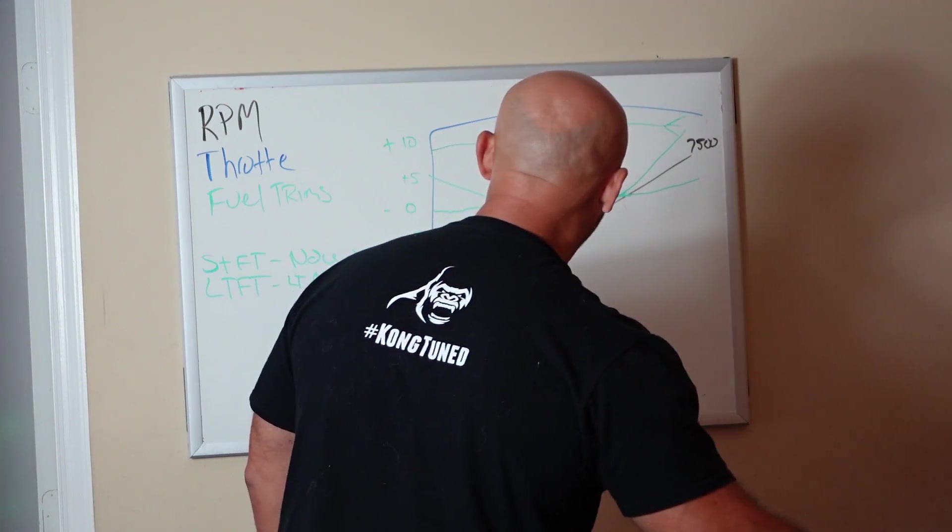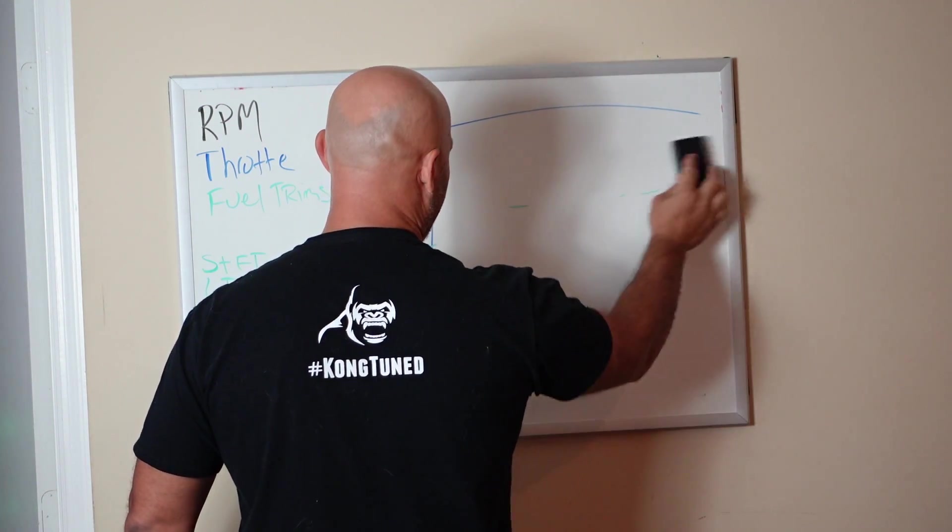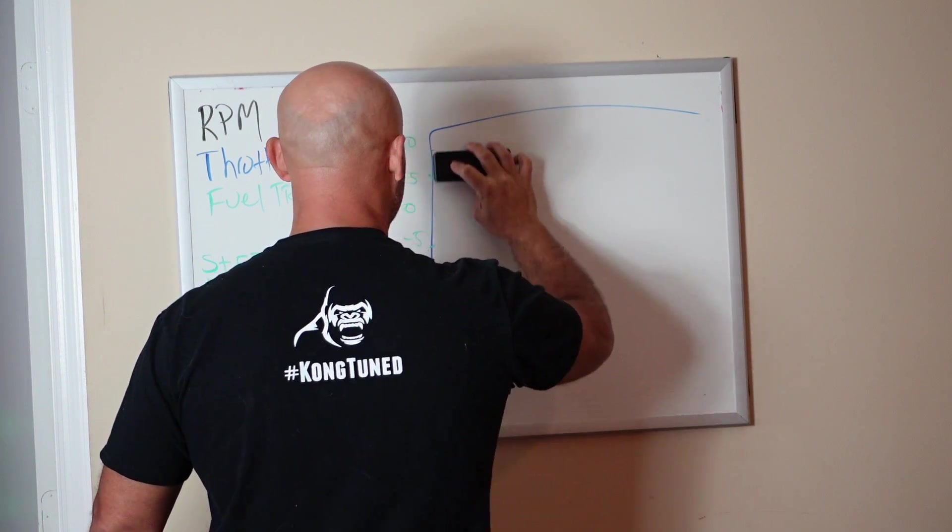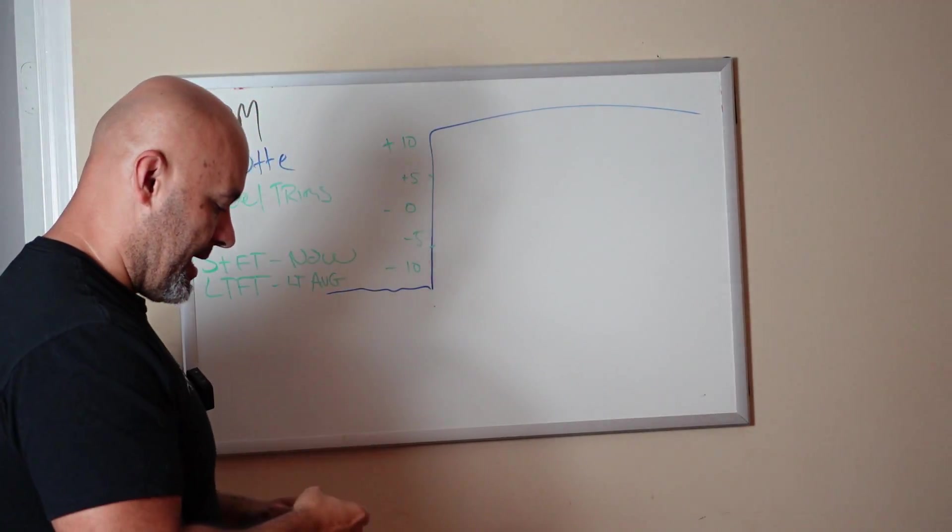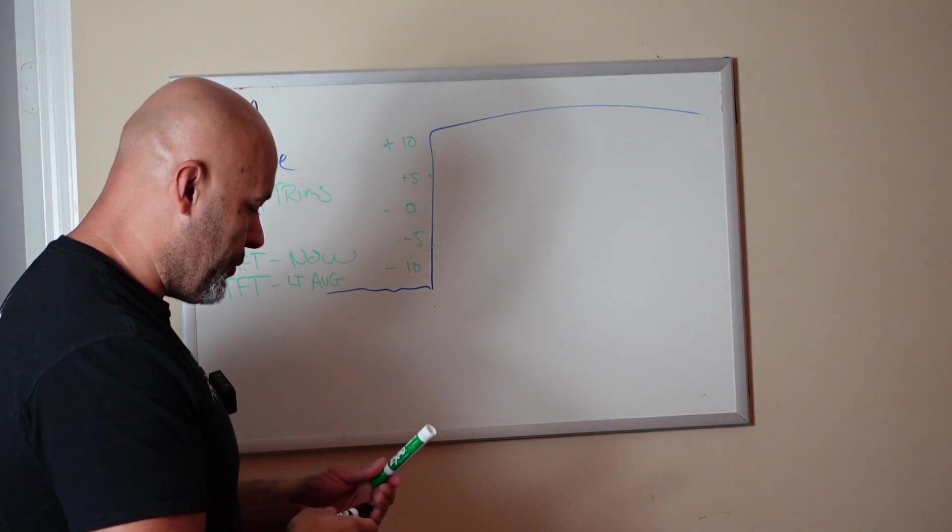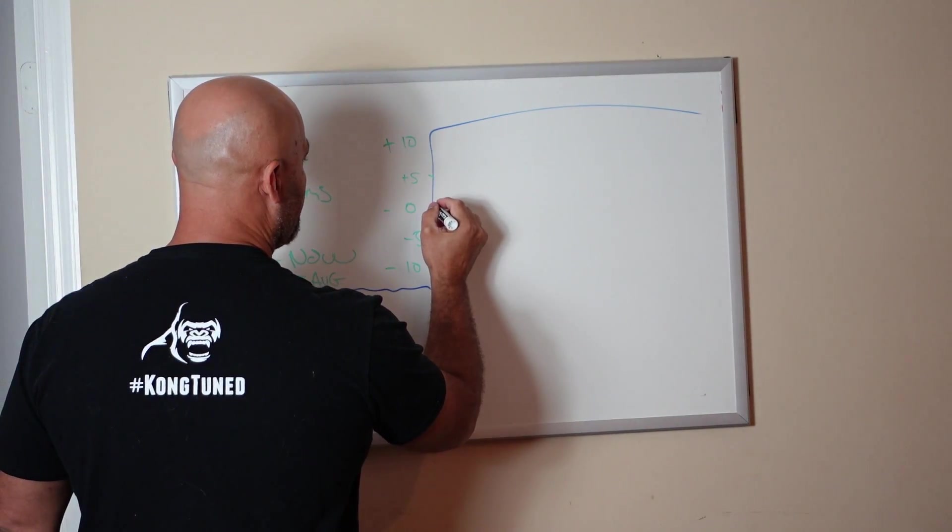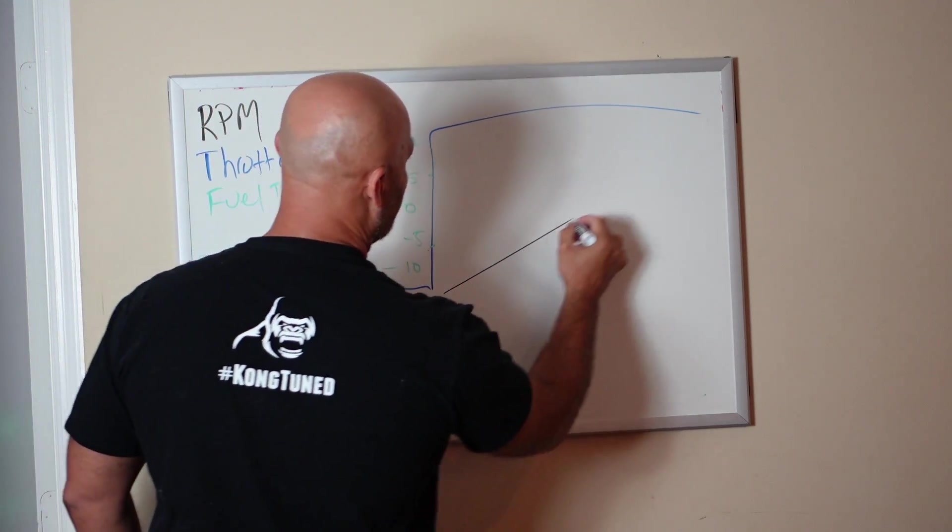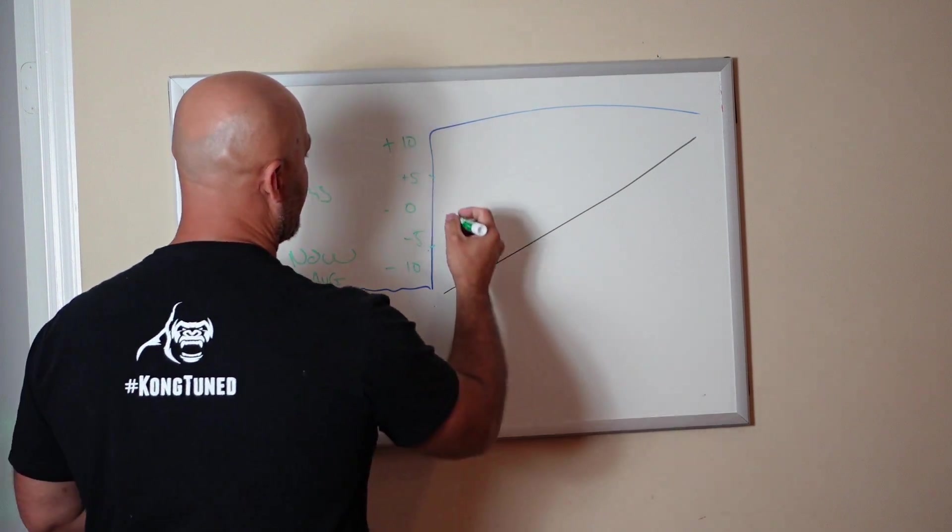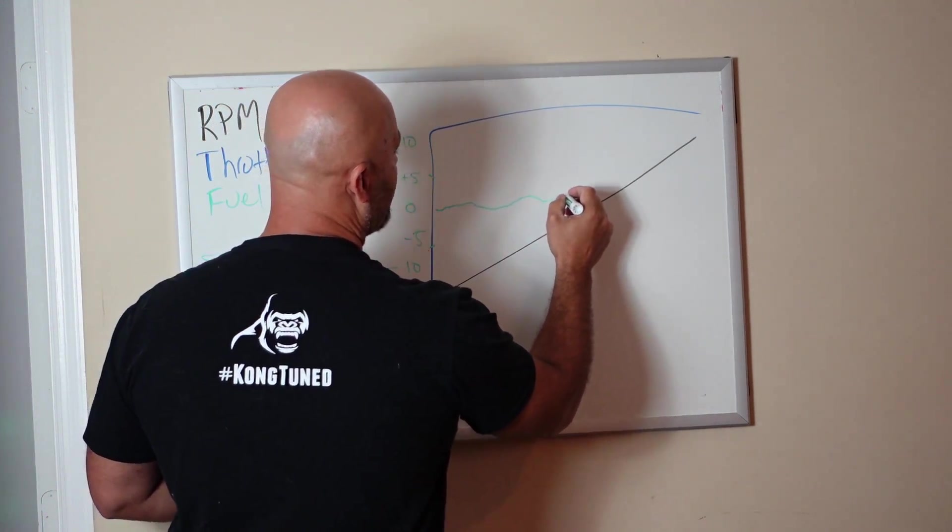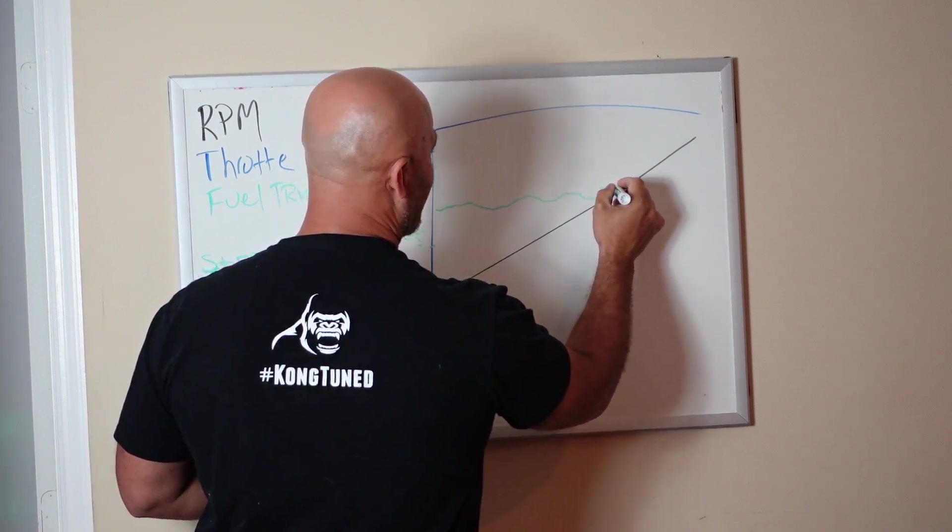Now we're going to talk Gen 3. Gen 3 Mustang thankfully has a fuel rail pressure sensor. This could be deceiving. I can tell that you have a fuel delivery issue based on fuel pressure. Let's say your fuel trims are nice, within 5%, kind of doing this.